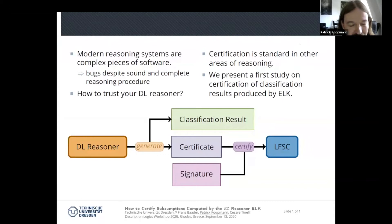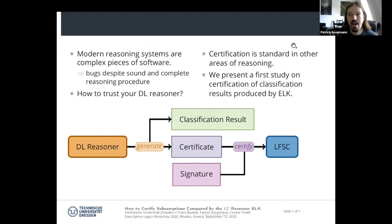The main storyline here is that modern description logic reasoners have become increasingly complex in recent years, which is due to the high complexities of the logics involved. As soon as you develop a complex software system, it is unavoidable that bugs are introduced, and even though in most cases the output of our reasoner is probably correct, we cannot be 100% sure. In fact, at the last reasoner competition in 2015, it was observed that sometimes reasoners differ in their output.